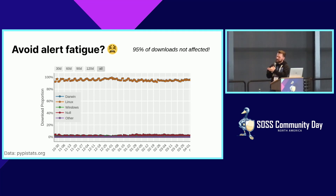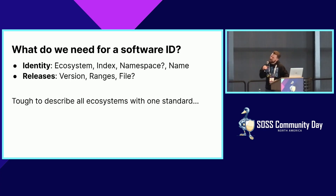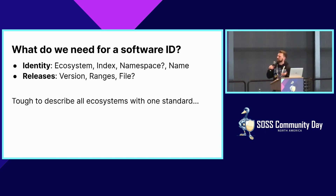It would be really great if our software ID system was able to provide this context so that scanners could avoid alerting the 95% of people who don't need to do anything. If we're going full XKCD standards here and asking what a perfect software ID would look like, you'd want things like: the ecosystem, where you got it from, the index, namespaces if you have them (like NPM does, though PyPI doesn't), project names, versions, ranges, and even file-level information.